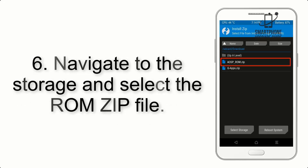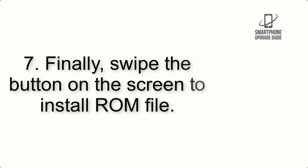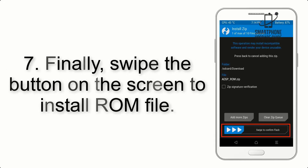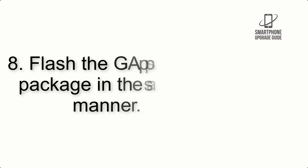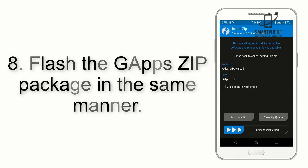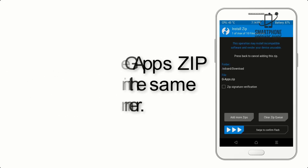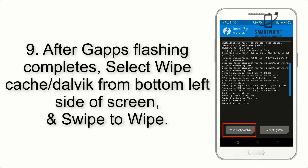Step 6: Navigate to the storage and select the ROM zip file. Step 7: Swipe the button on the screen to install the ROM file.